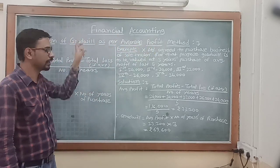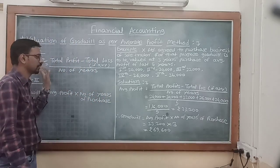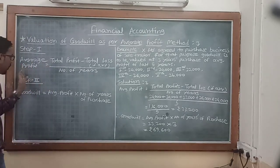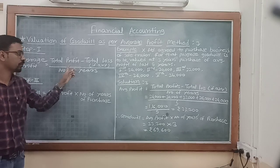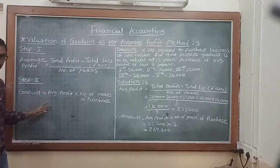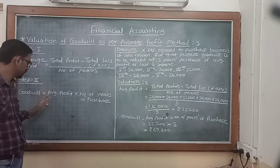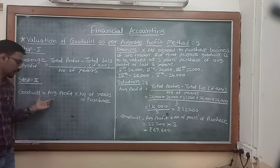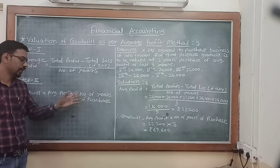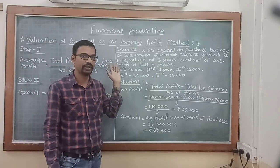This is the simplest method of calculation of valuation of goodwill. As per this method, under step number 1, the average profit is calculated and the formula is: total profit minus total loss, if any, divided by number of years. In step number 2, we compute the value of goodwill using the formula: average profit multiplied by number of years of purchase. In this way, goodwill is found out according to the average profit method.